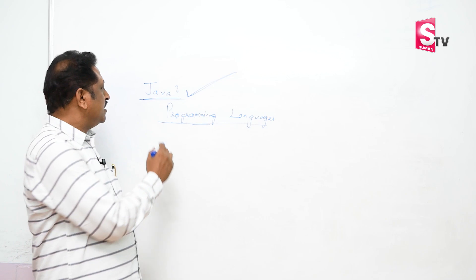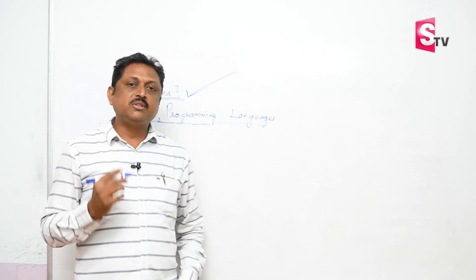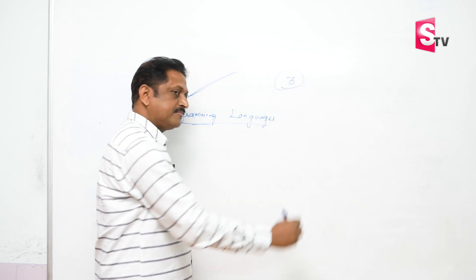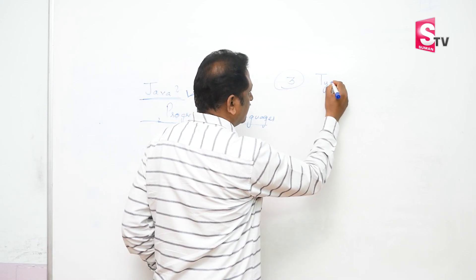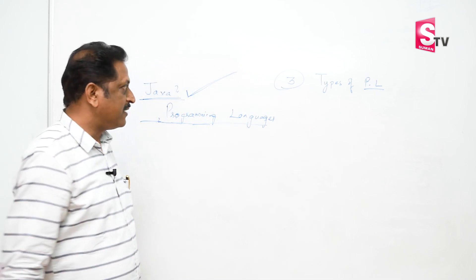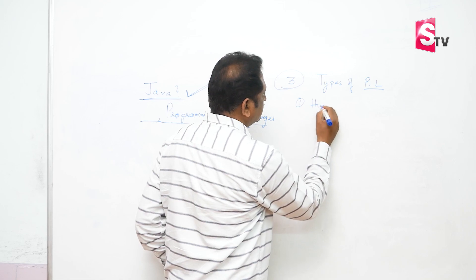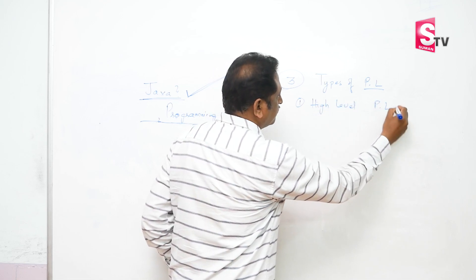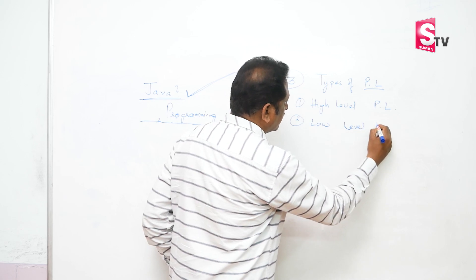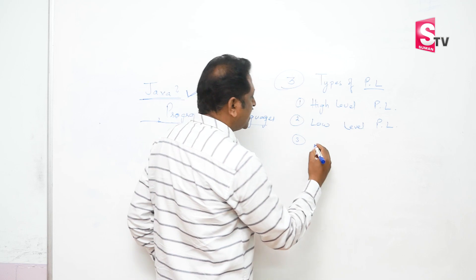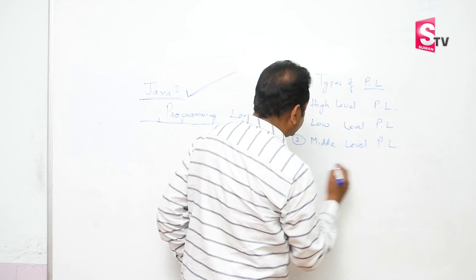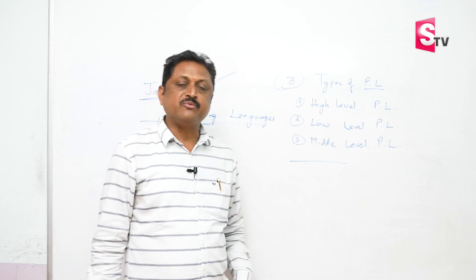Before going to see Java, we have to know the types of programming languages. We have three types of programming languages. The first one is high level programming language. The second one is low level programming language. And the third one is middle level programming language. These are the three levels of programming language we have.